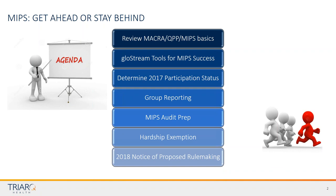We're going to have a new conversation about determining your participation status for 2017, and look into group reporting — I'll help you understand what group reporting is about. It's never too soon to think about an audit: what happens if we get audited? Let's make sure we're preparing now. There's also a hardship exemption to discuss, and then let's talk about what's on the proposal for 2018.